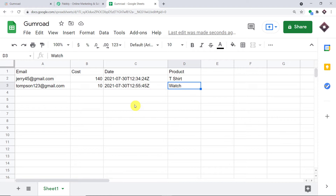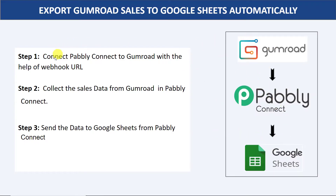Let me give you a small overview of the steps involved in this integration. First, we are going to integrate Gumroad to Pabbly Connect using a Webhook URL. You will get the Webhook URL from Pabbly Connect, copy it, and paste it into Gumroad. Then in the second step, you will collect the sales data from Gumroad in Pabbly Connect, and that sales data will be automatically entered into Google Sheets using Pabbly Connect by mapping. After this integration is done, all you have to do is sit back and relax — when a new sale is created in Gumroad, that data will automatically arrive in Google Sheets in real time.